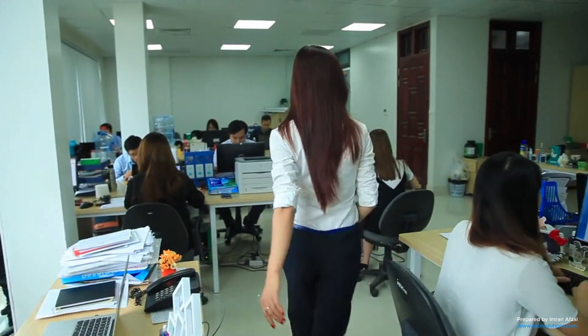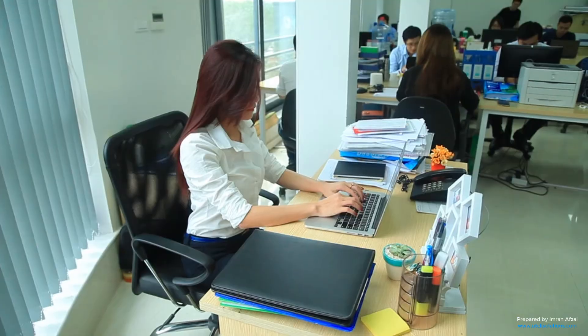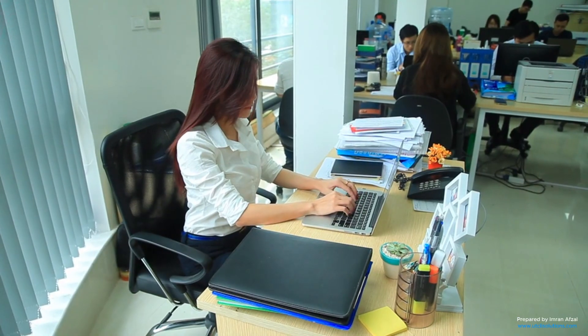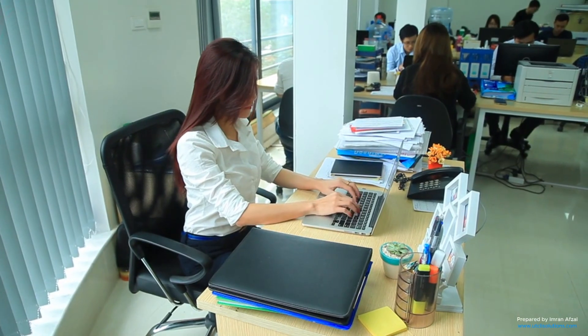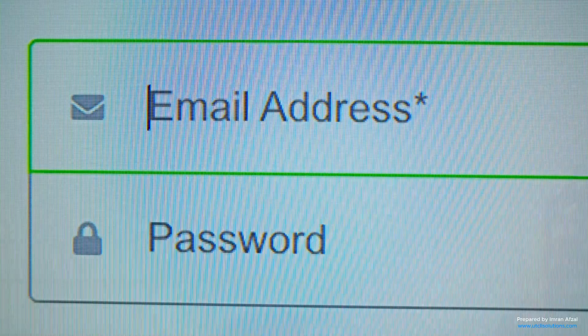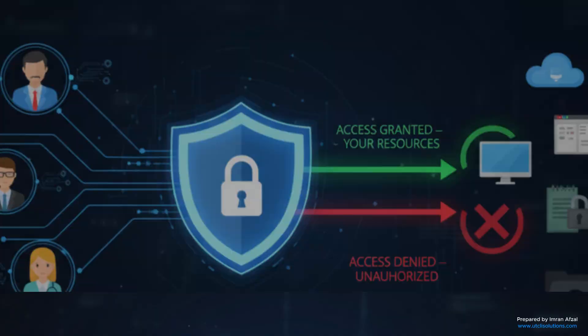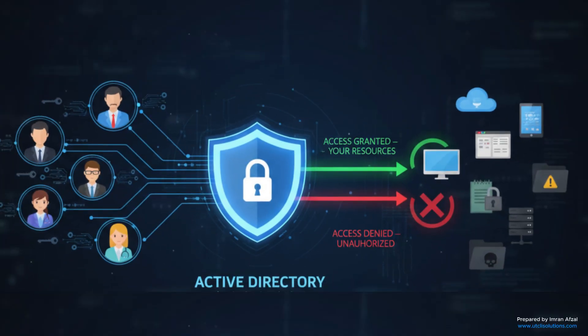Let's say you walk into a school or office and sit at any computer. You type in your username and password, and like magic, your desktop appears, your files are there, and your email works. That's Active Directory doing its job. It checks who you are and gives you access to everything you need, and only what you are allowed to see.